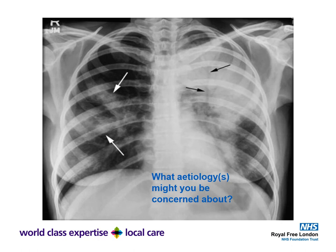What etiologies might you be concerned about here? There are bilateral patchy infiltrates, particularly prominent on the left. This is not a normal chest X-ray by any stretch. Simple pneumonias are often localized to one lobe; this has multi-lobar involvement on both sides. You'd be concerned about fungal infection, HIV-related Pneumocystis pneumonia, or viral infection with superimposed pneumonia. COVID-19 chest X-rays can also appear like this — email me for a portfolio of COVID-19 chest X-ray examples.